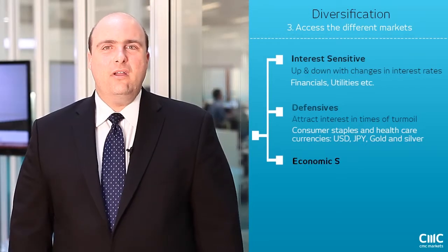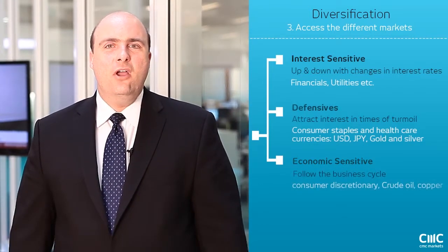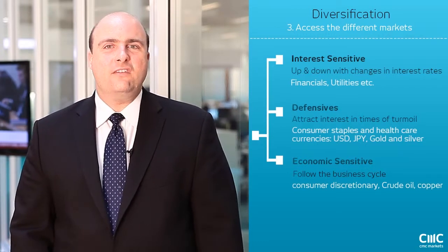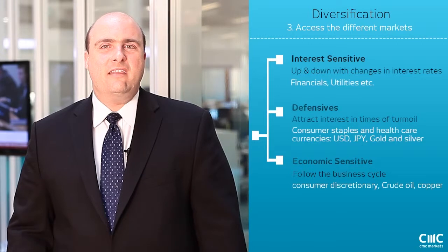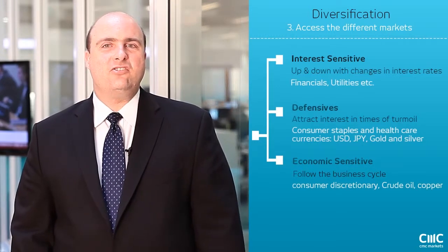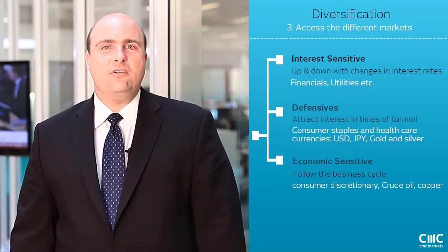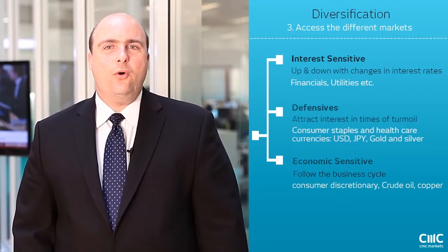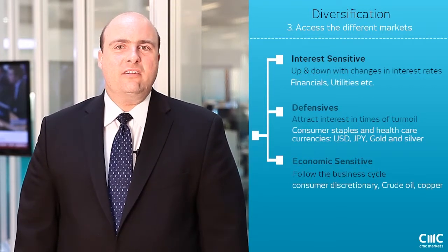The third group is the economically sensitive group. These are areas that tend to go up and down with the global economy. In the case of stocks this includes industrial companies and consumer discretionary companies. In the case of currencies it's usually major currencies such as the euro and the pound. This group also includes most commodities including crude oil, copper, wheat, and a number of other major commodities.